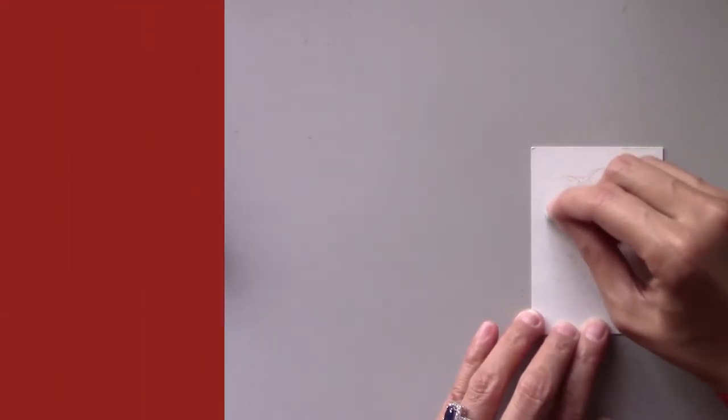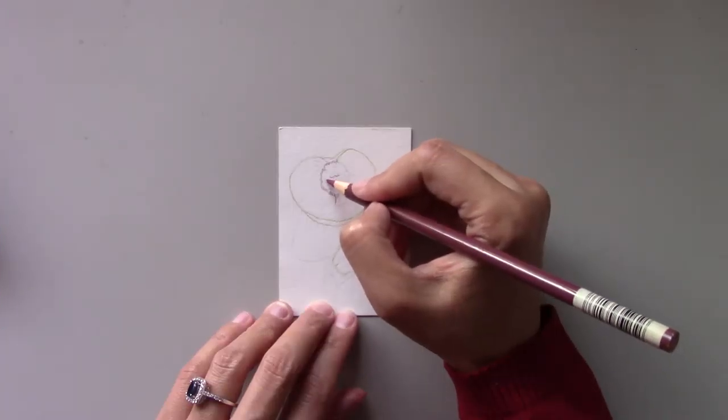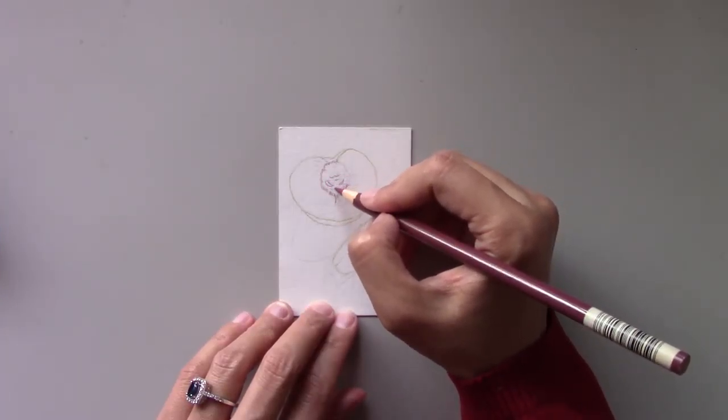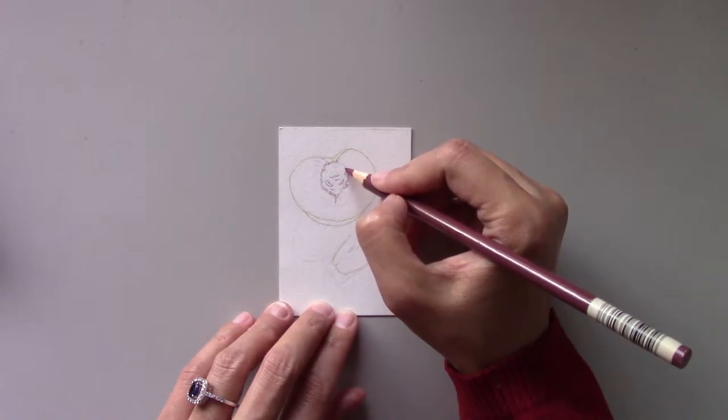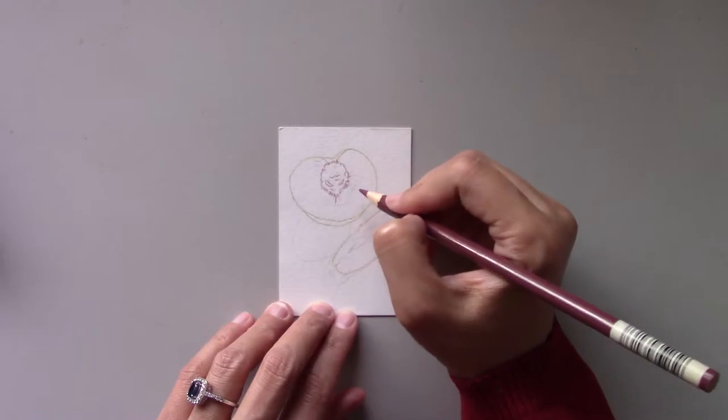Before you start, it's best to erase the pencil marks from the paper surface with putty. To prevent the pencil lines from disappearing, I trace them lightly with colored pencils. I use chartreuse for the peach and mahogany red for the pit.